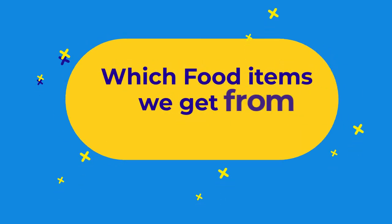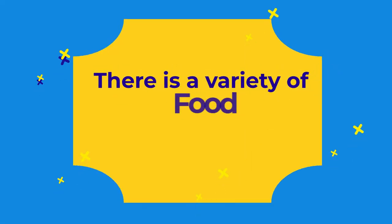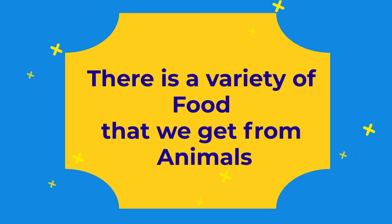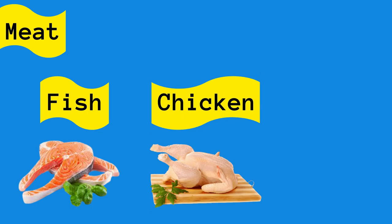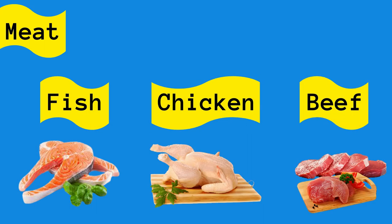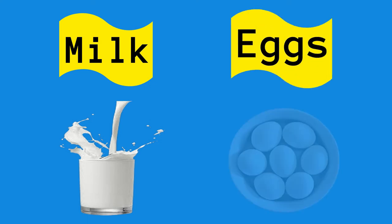Which food items do we get from animals? There is a variety of food that we get from animals, such as meat, fish, chicken, beef, etc. Also milk and eggs.